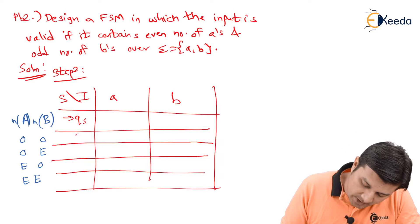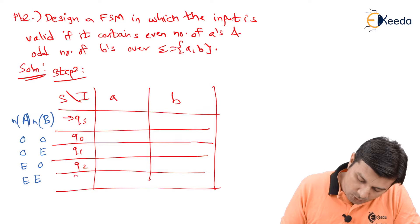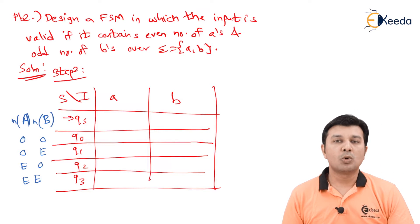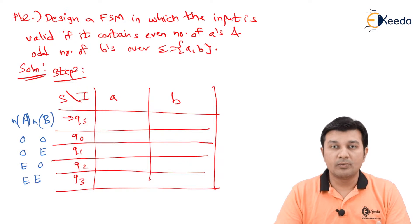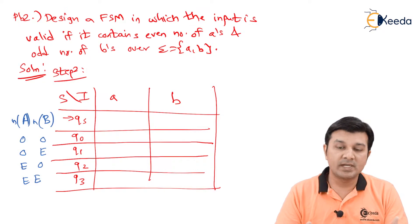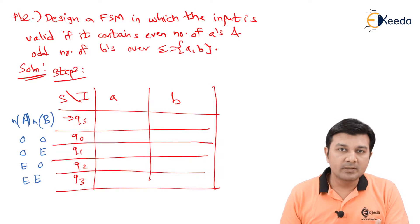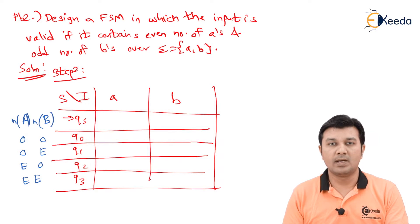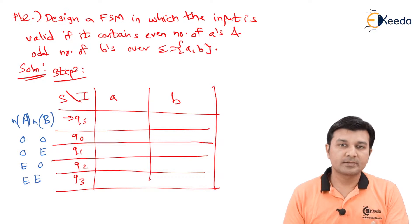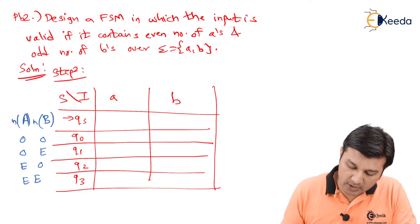The state names will be Q0 for odd-odd, Q1 for odd-even, Q2 for even-odd, and Q3 for even-even. Overall in step 2: the input set consists of A and B; the output set indicates whether the input is valid — yes or no; and the set of states is Q0, Q1, Q2, and Q3.